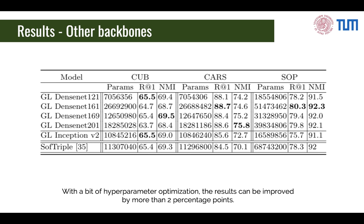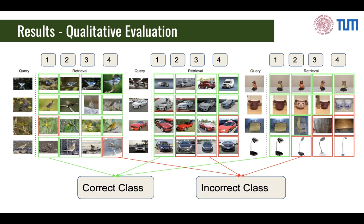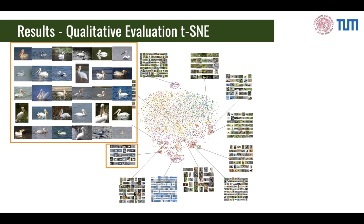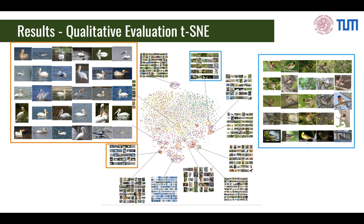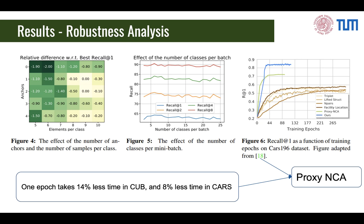We see that results further improve with a larger network reaching the best results. Furthermore, with a minimal amount of hyperparameter tuning, the results can be increased by a further two percentage points. In the paper, we show a bunch of qualitative results, such as retrieval examples and t-SNE, where we see images of the same class being clustered in particular parts of the embedding space. We further give a detailed robustness analysis, showing that our method is robust to the choice of hyperparameters and is faster than most other methods.